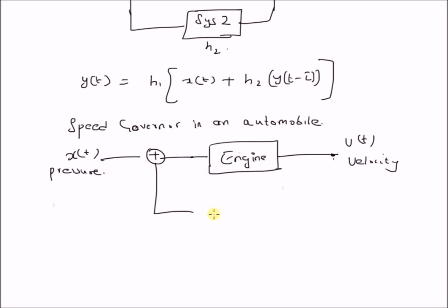And then we have the stabilizer, which basically takes the velocity v of t minus tau, that is velocity from a previous instant, and then converts it into basically a stabilizing pressure, a quantity that is subtracted from the original pressure to produce an input which will maintain the velocity of the vehicle within reasonable limits, that is x_in of t.